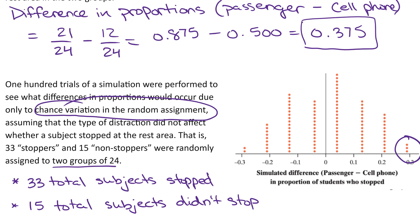Let's connect this to Part A before writing up Part B. In Part A we found a difference in proportions of passenger minus cell phone equal to 0.375, but that was just from one sample of 48 students. The simulation asks: what if we got another group of 48, and another, and 100 groups total? Each dot on the dot plot represents a similar difference in proportions for a new simulated group of 48 students. Our 0.375 doesn't even fit on the dot plot — we didn't get a dot that large. Our largest simulated dots were at 0.29.